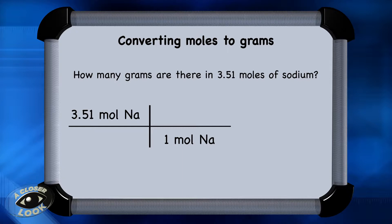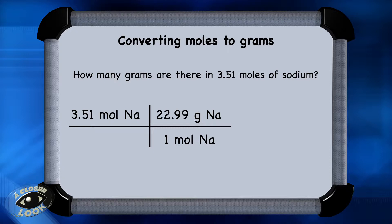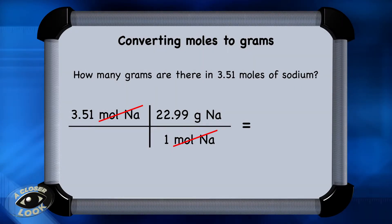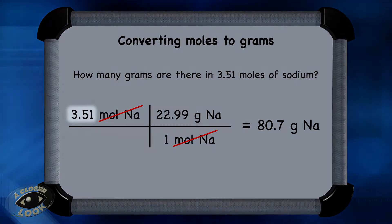You're going from moles to grams, so you use the molar mass, which you find on the periodic table. The units of moles of sodium will cancel because they appear in both the numerator and the denominator. Now you're ready to solve the problem — simply multiply 3.51 times 22.99. Notice that grams of sodium is the unit left in the numerator. When you multiply 3.51 times 22.99, you find that the mass of sodium is 80.7 grams — the same amount of sodium as in 3.51 moles.